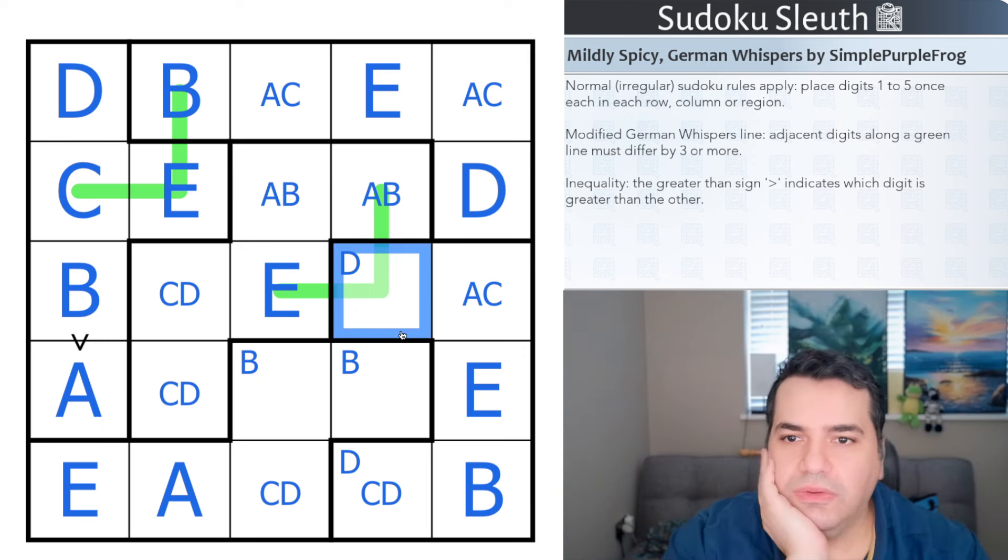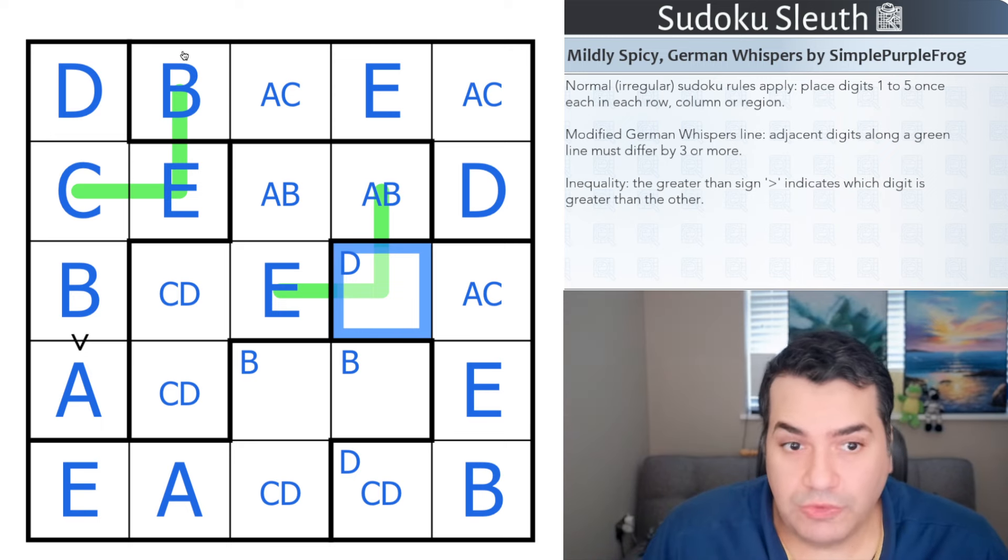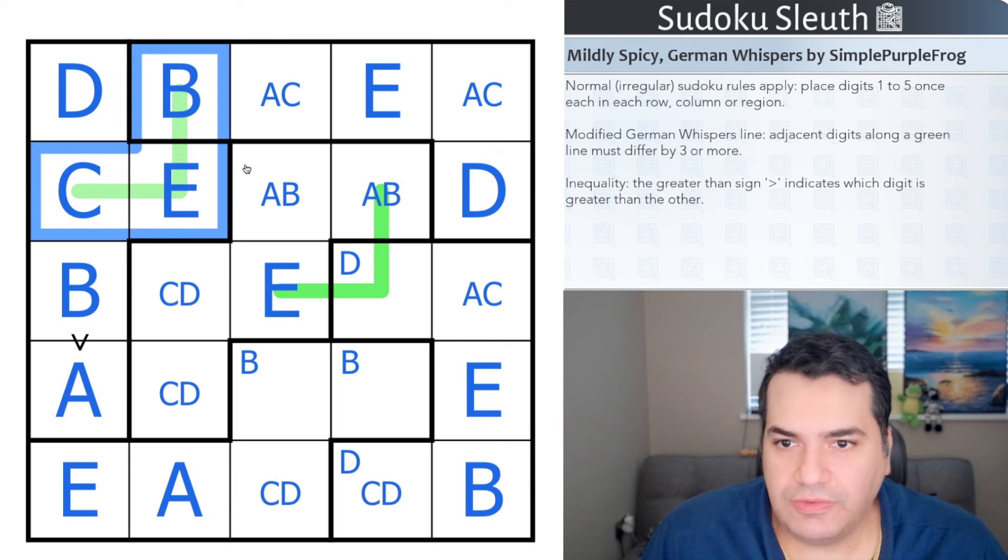Right, let's think about the German whisper lines for a second. I think essentially we have something very similar to standard German whispers with the five, in that on a normal German whisper line if you put a five on it, something to be five or more away would be impossible because it will either be zero or ten, neither of which are allowed. Now I think we have something very similar in here. In one to five and three or more away, I don't think we can ever fit a three on here. The reason I'm thinking that is for three to be three or more away, it's either zero or six, and clearly not part of the digits one to five.